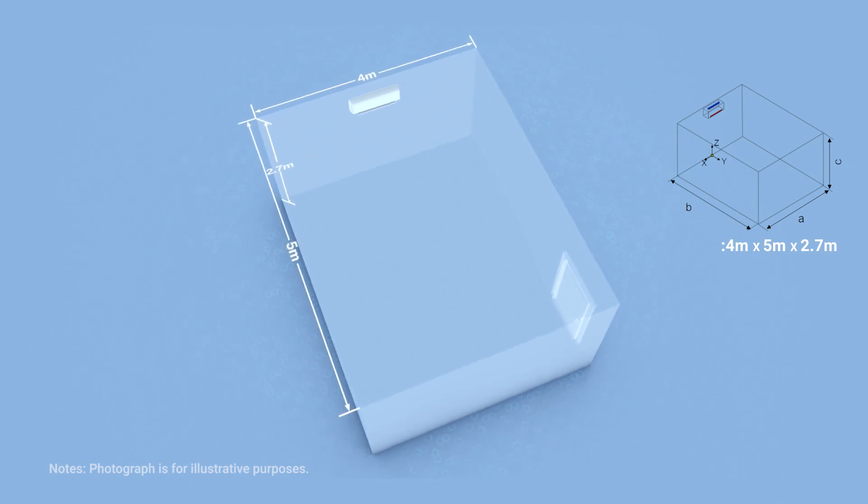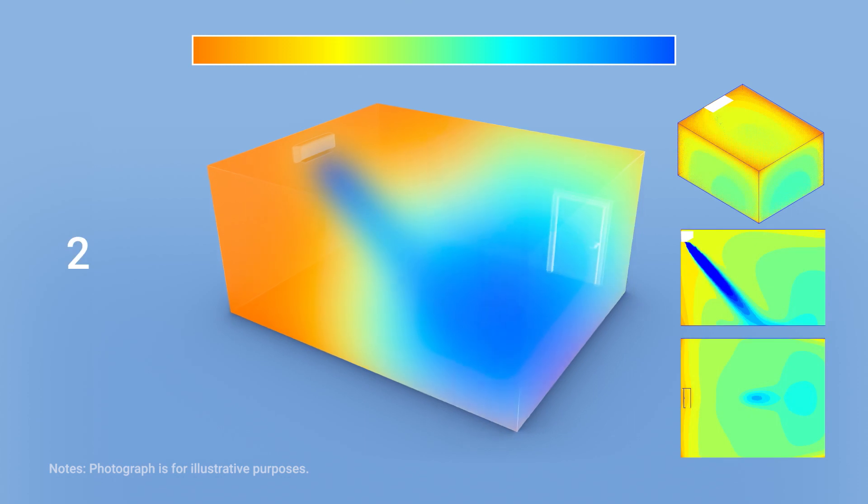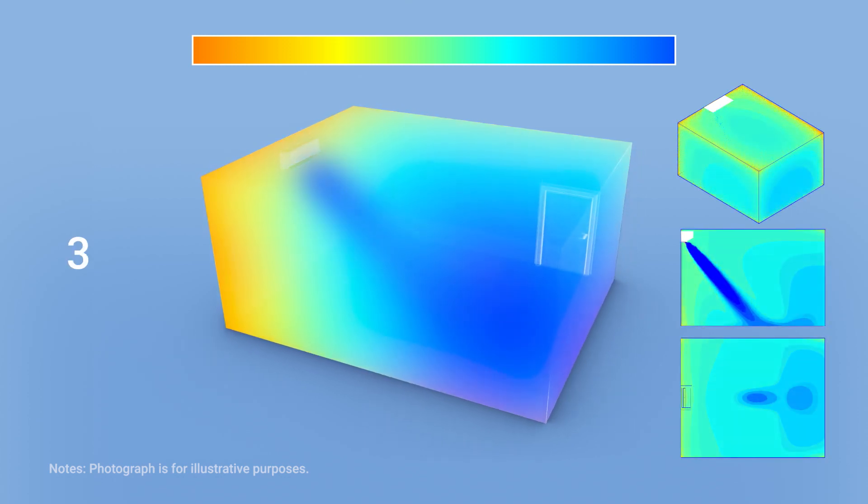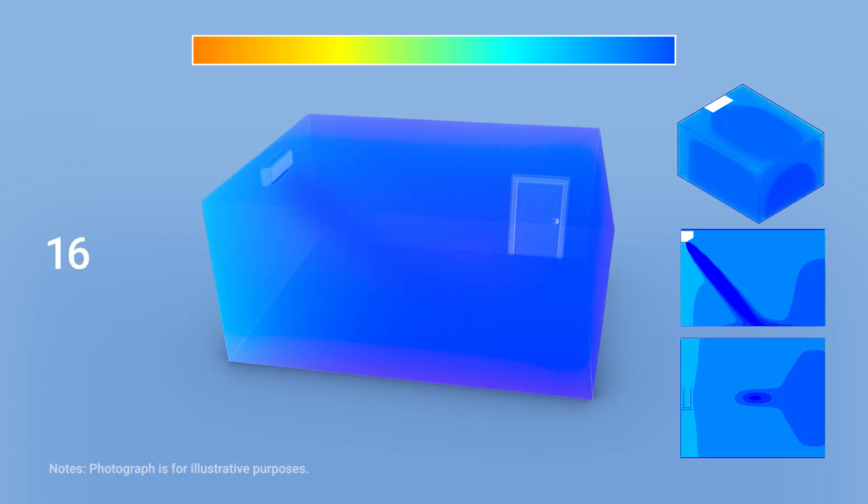Can one air conditioner with Nano-EX fill a room? This simulation shows the results for a 54 cubic meter room of 4 meters by 5 meters by 2.7 meters. The bluer the color, the more effective the Nano-EX. It takes about 30 minutes to fill the room with Nano-EX.